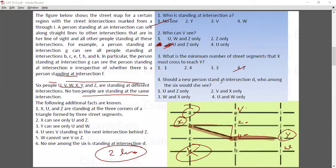Should a new person stand at D, who among the six should see he or she? So she can see, he could go deep. So the answer is either X and W, which is option number four. So this completes our set.